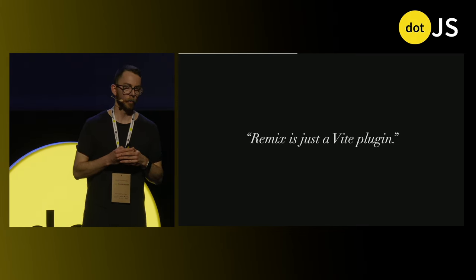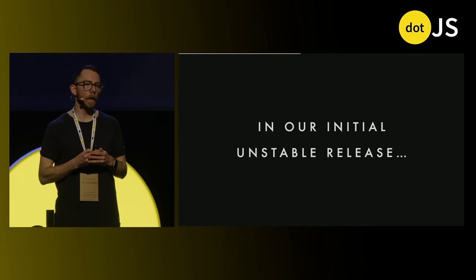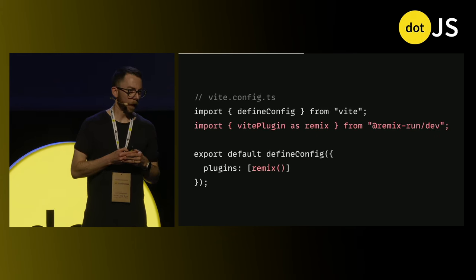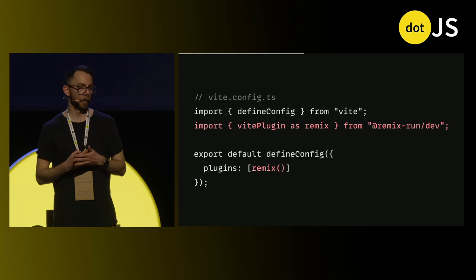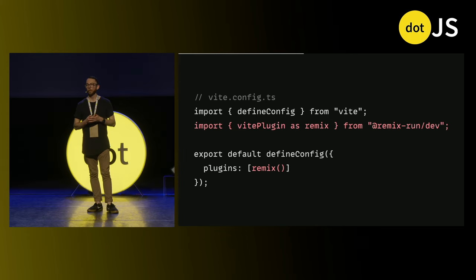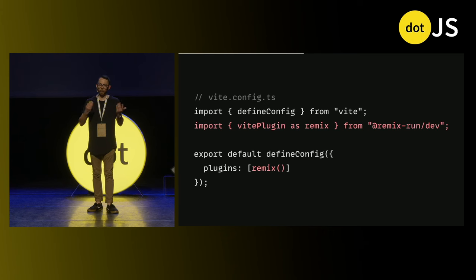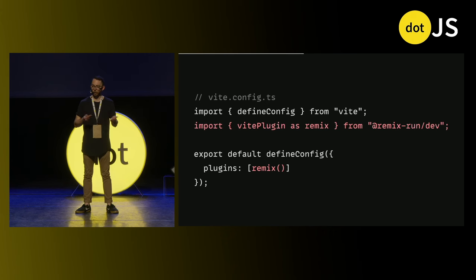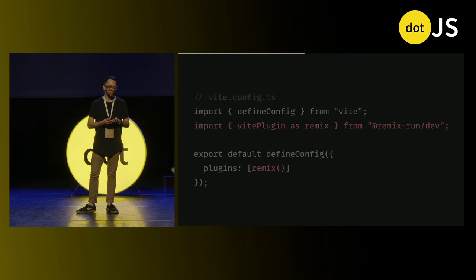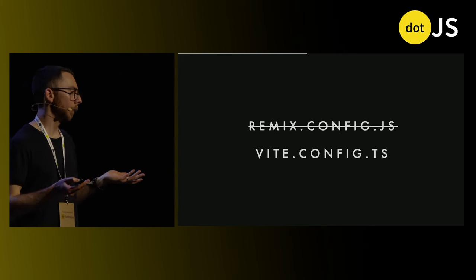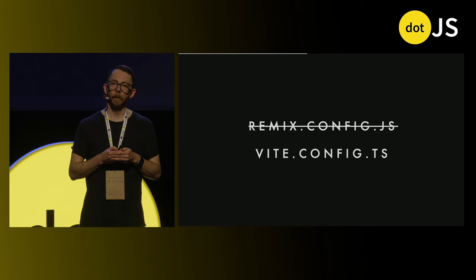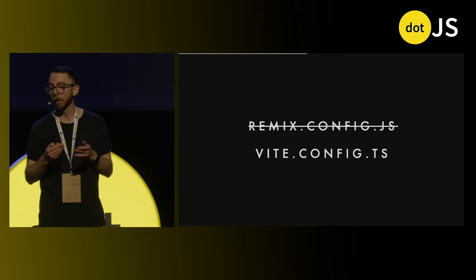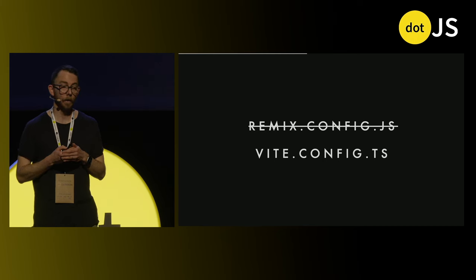So in our initial unstable release, it looks something like this. In your Vite config, you would import the Vite plugin as Remix from Remix Run slash dev — this was just a regular old Vite plugin from the consumer's perspective — and you would pass it into the plugins array to Vite. You've essentially just told Vite: here's a plugin, and it's registering as a framework behind the scenes. That meant that no longer was there a dedicated config file; remix.config.js no longer existed. Instead we had a vite.config.ts, so as a bonus it meant you got type checking of your config.